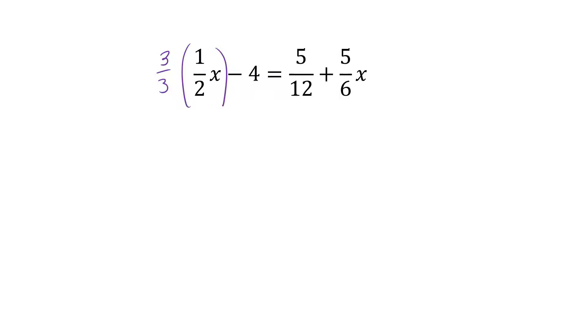For the constant term, the common denominator is 12, so we're going to multiply negative 4 times 12/12. Once we have created fractions with common denominators, we will rewrite it.